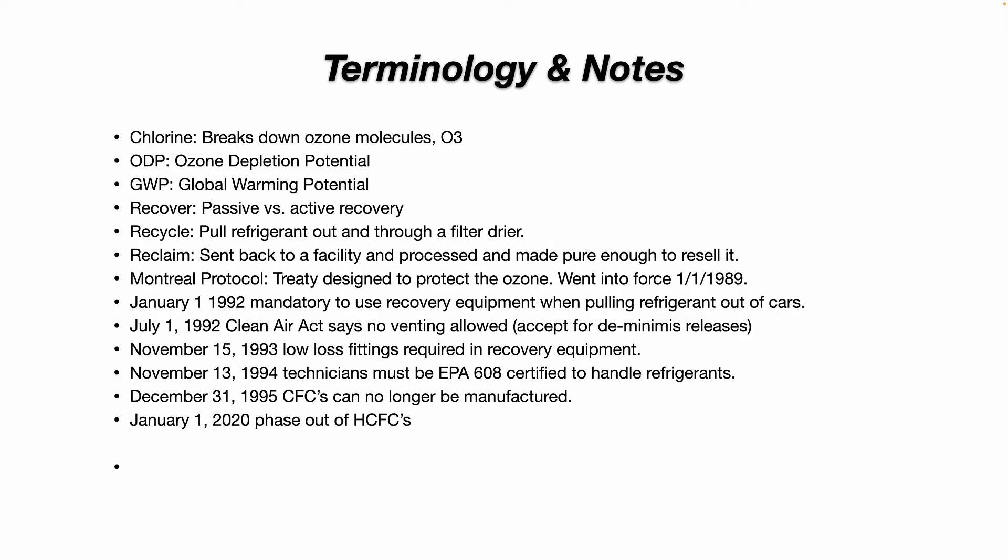A de minimis release is unintentional and unavoidable — or if you're recovering refrigerant and something fails and bursts. What is NOT de minimis is if you intentionally go up to a piece of equipment, cut the refrigerant line, and release the full charge to the atmosphere. That is illegal and will get you a fine. If someone sees you do it, they can receive a reward of up to $10,000. De minimis means accidental — you made a good-faith best effort to avoid releasing refrigerant into the atmosphere.